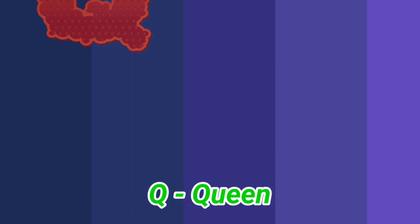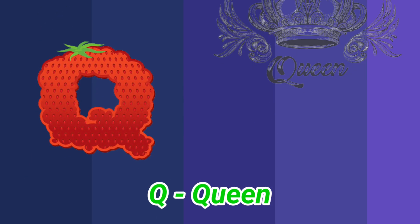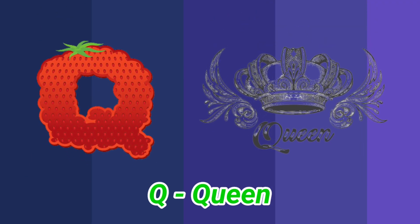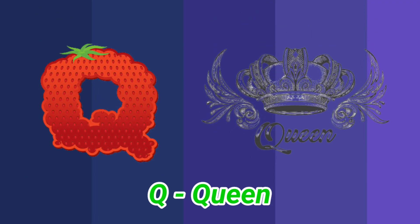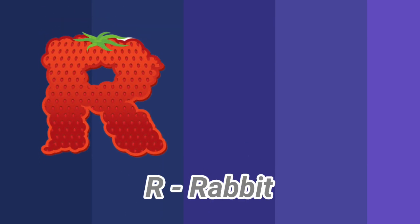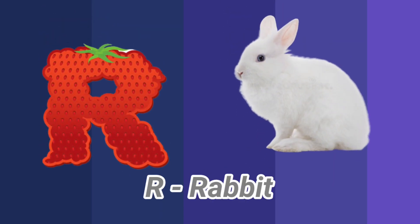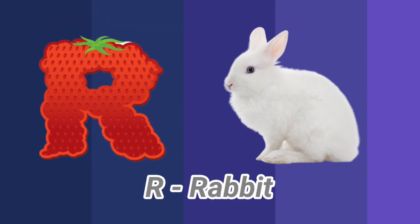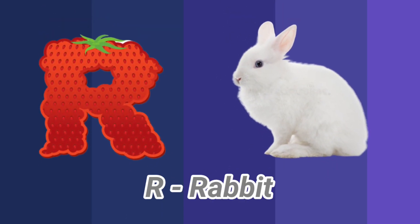Q is for queen, k-k-queen. R is for rabbit, r-r-rabbit.